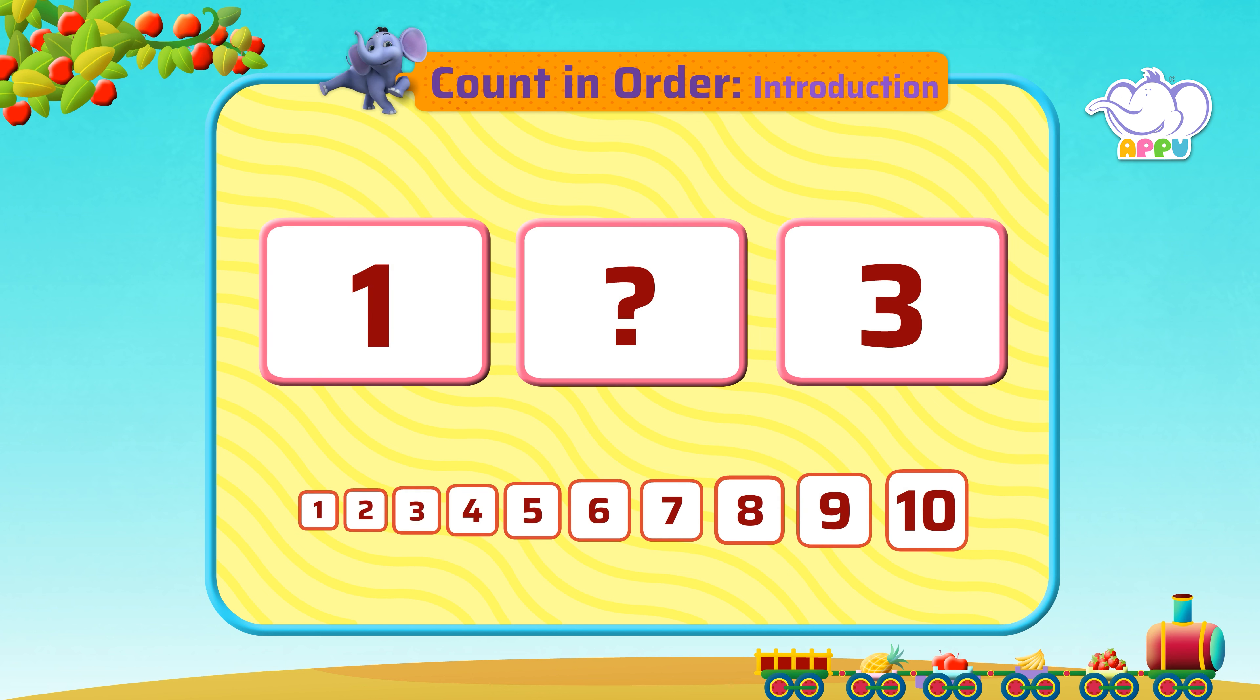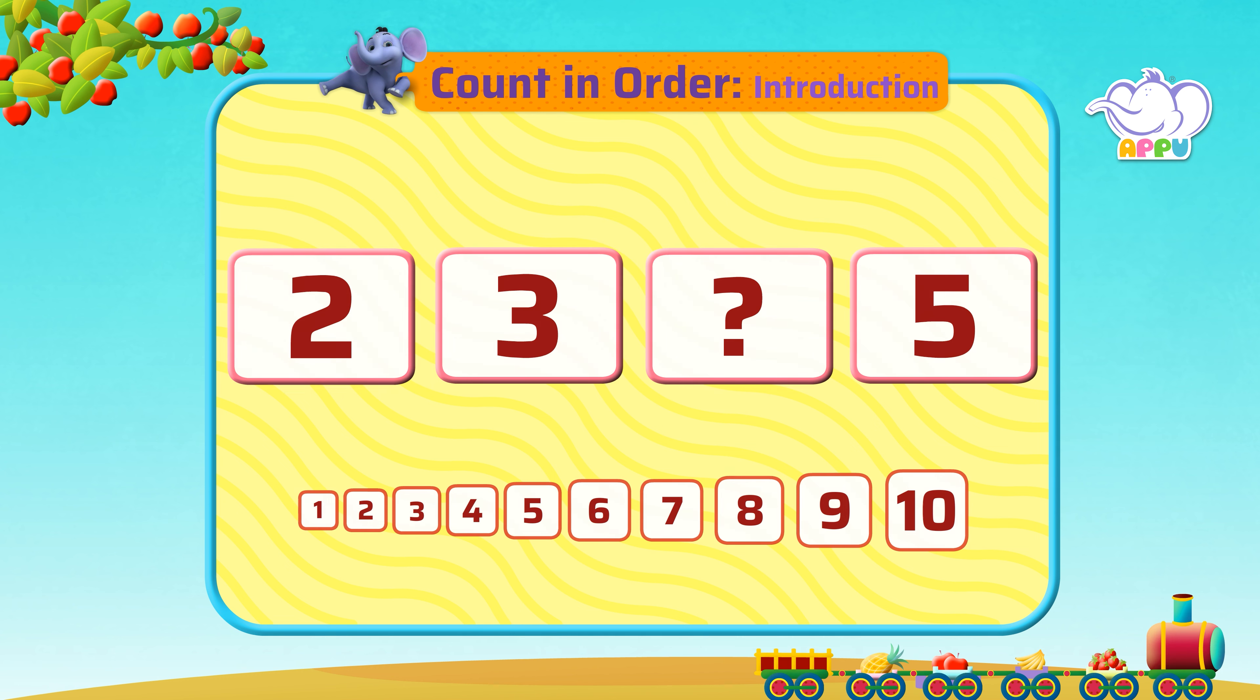these numbers in a line. We have number one, a missing number, and then three. What is the missing number? What comes after number one and before number three? Two! The missing number is two. One, two, three. Look at...